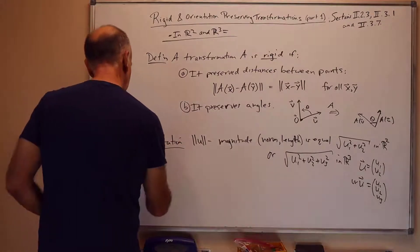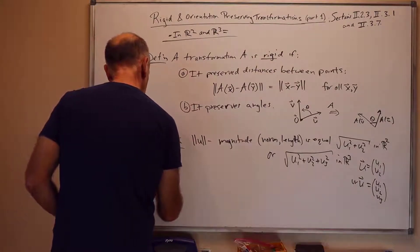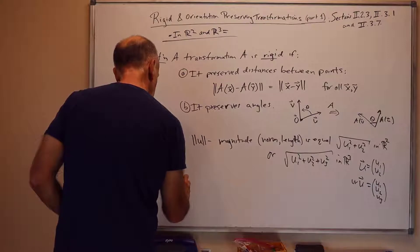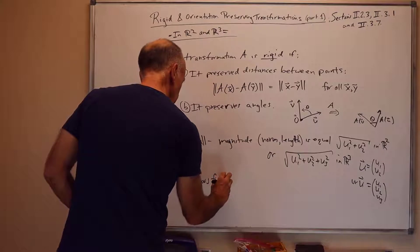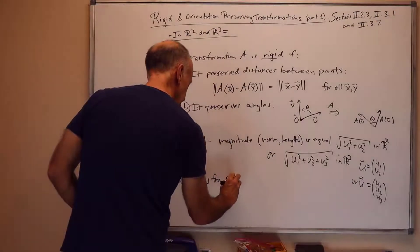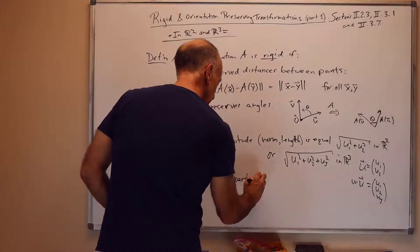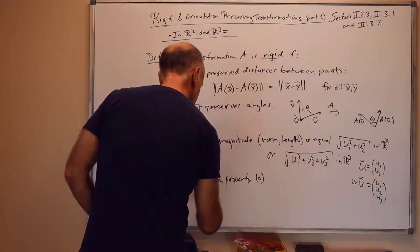Actually, property B follows from property A. In other words, preserving angles follows from A. So, really, writing property B there was redundant. And that's by the side-side-side theorem of geometry.